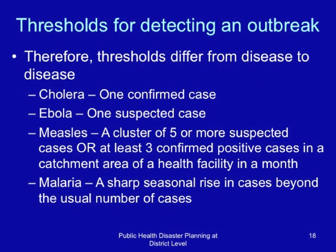For cholera, just one confirmed case triggers an outbreak declaration. For Ebola, one suspected case is sufficient. For measles, a cluster of five or more suspected cases, or at least three confirmed positive cases in a health facility catchment area occurring in one month. For malaria, because it is endemic in many parts of Eastern Africa, an outbreak occurs when there is a sharp seasonal rise in cases beyond the usual number of expected cases.